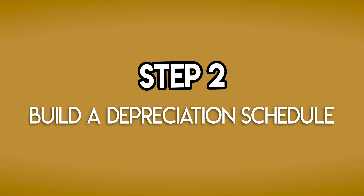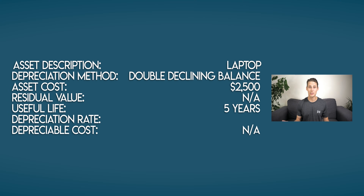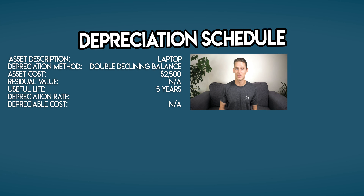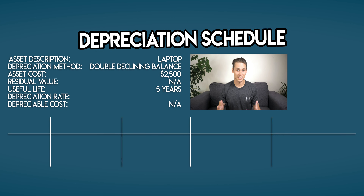Step 2: build a depreciation schedule. When using the double declining balance method, the depreciation schedule is laid out in exactly the same way as it was last week when we covered the straight line depreciation method. It's a table with 5 columns.